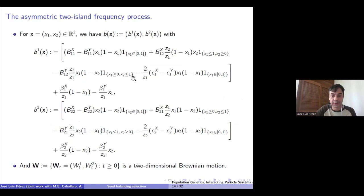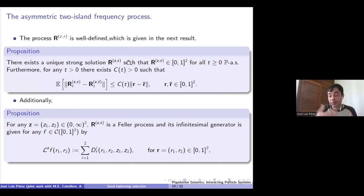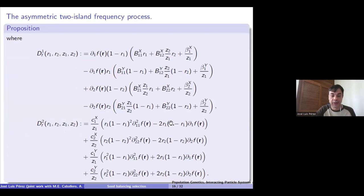In the more general case working with continuous state branching processes with immigration, the frequency process becomes more complicated because we have to consider jumps — additional martingale terms from the jump parts and additional drift terms from the jumps. But for simplicity I present only the continuous case. The frequency process is well defined: there is a unique solution to the stochastic differential equation which lies in [0,1]² for all t almost surely. We also have estimates in the initial conditions which help prove that the frequency process is a Feller process, and we describe its dynamics via the infinitesimal generator.